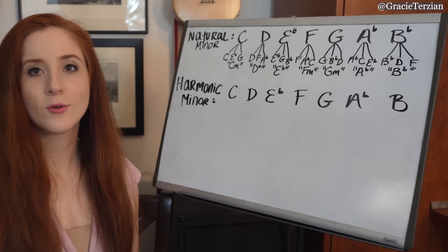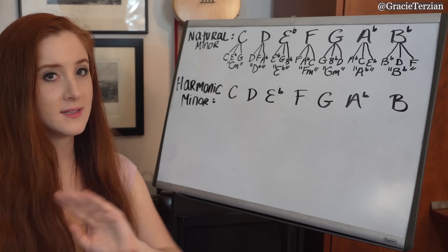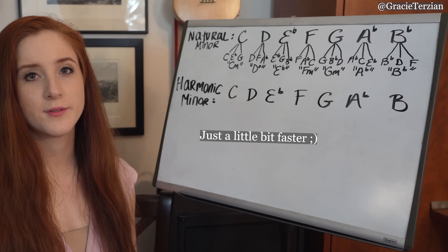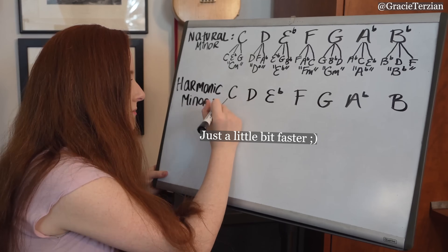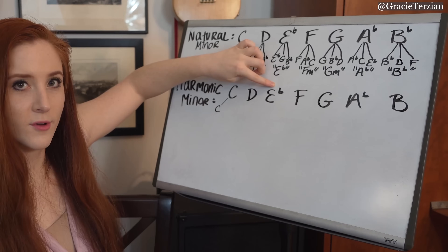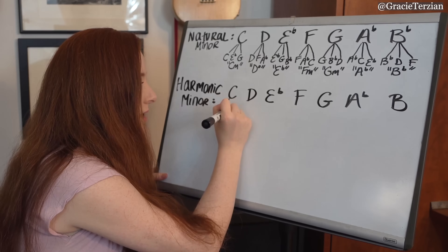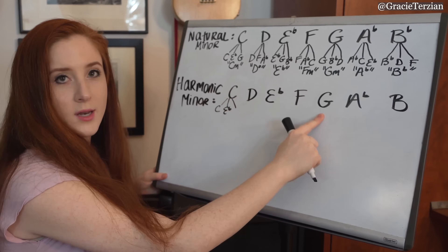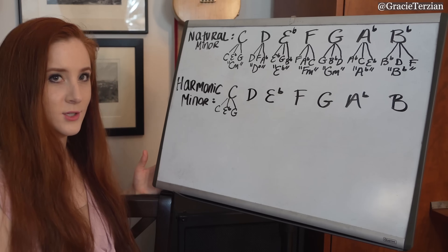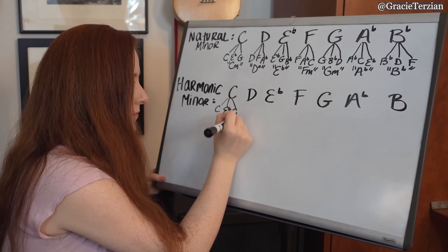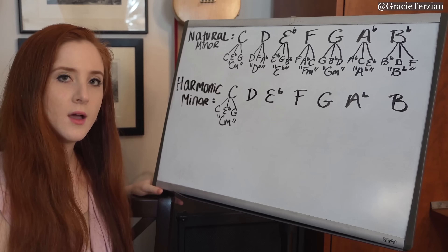Let's figure out the diatonic chords of C harmonic minor the same way. Moving up in thirds: C, E-flat, G — that's C minor, same as before. Next chord: D, F, A-flat — that's D diminished, same as before. Third chord: E-flat, G, and now B-natural — that's an E-flat augmented chord, which is different from the natural minor scale where we had E-flat major.